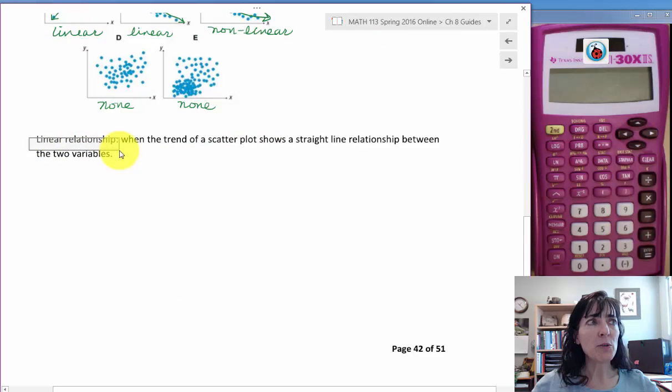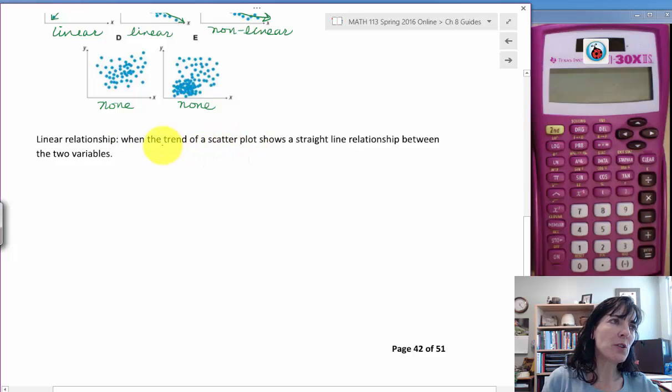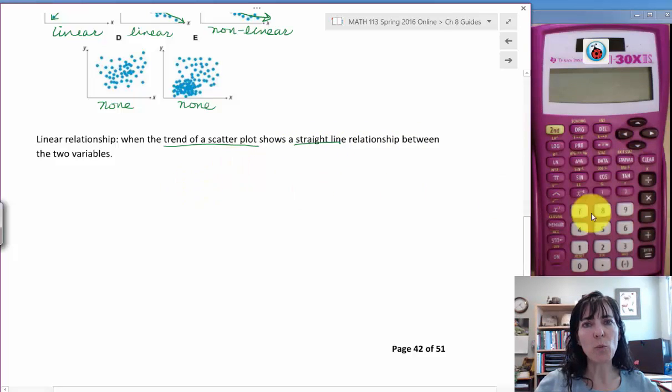If we have a linear relationship, that's when the trend of a scatter plot shows a straight line. The trend, meaning where it's heading, shows a straight line relationship between the two variables. And that's what we're looking for when we are working in this chapter, a straight line relationship between the two variables.